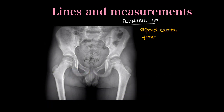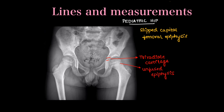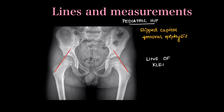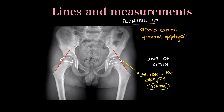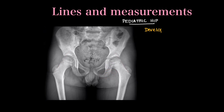Pediatric hip x-rays are identified by unfused tri-radiate cartilage and unfused epiphysis. In cases of suspected slipped capital femoral epiphysis, we draw Klein's line, drawn tangential to the lateral aspect of the femoral neck. Normally this line will intersect part of the epiphysis of the femoral bone. In cases of epiphyseal slip, there is no intersection of the line with the epiphysis.